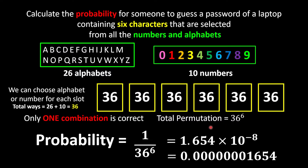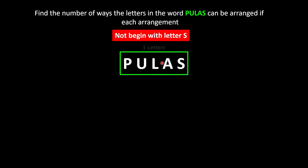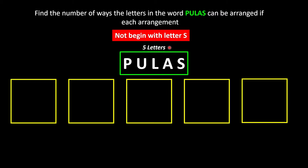We're going to find the number of ways the letters in the word PULAS can be arranged if each arrangement must not begin with the letter S. We're going to rearrange the 5 letters of PULAS, so we prepare 5 slots. There is a condition: the word cannot begin with S, so S is banned from the first slot. That leaves only 4 choices for the first slot: P, U, L, or A.